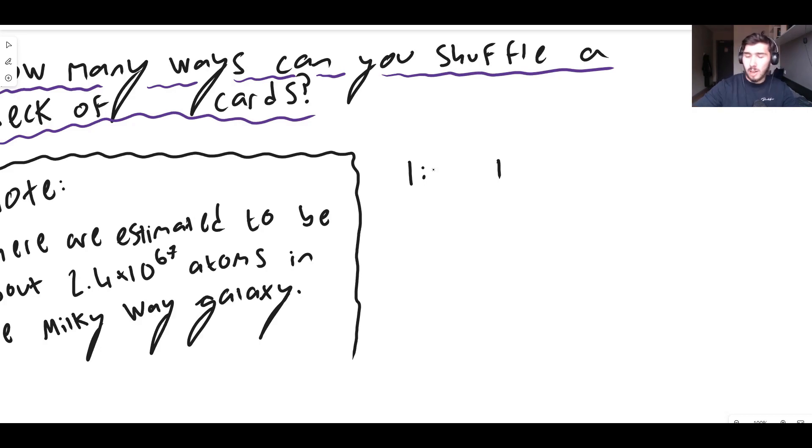Now if I have two objects, let's say that I have a pencil and a pen. How many ways can I arrange these guys? Well I can have this combination and I can have this combination. So this is two different combinations which means if you have two objects you can have two different combinations of them.